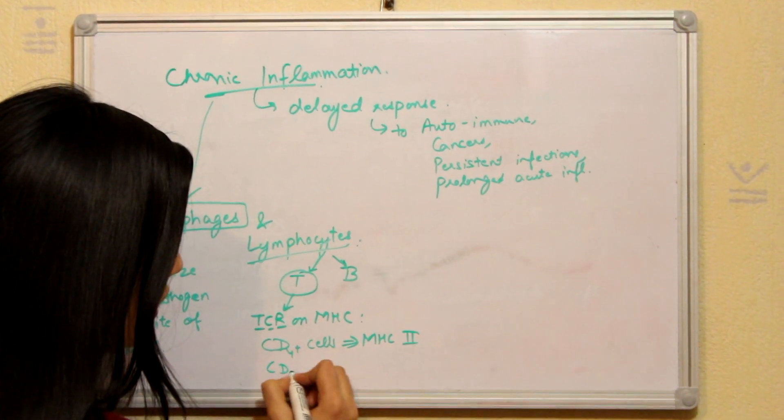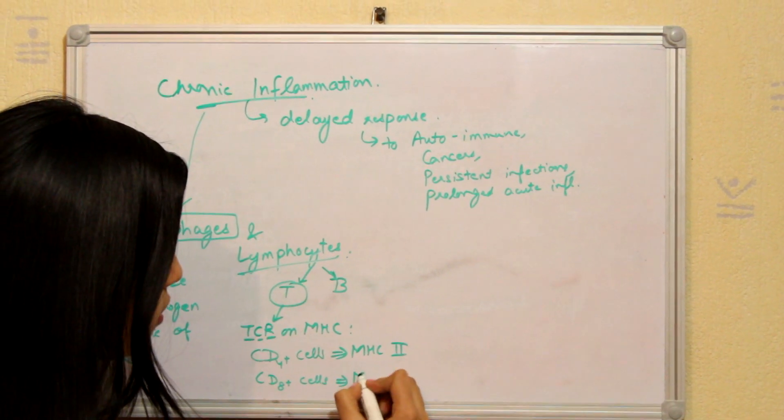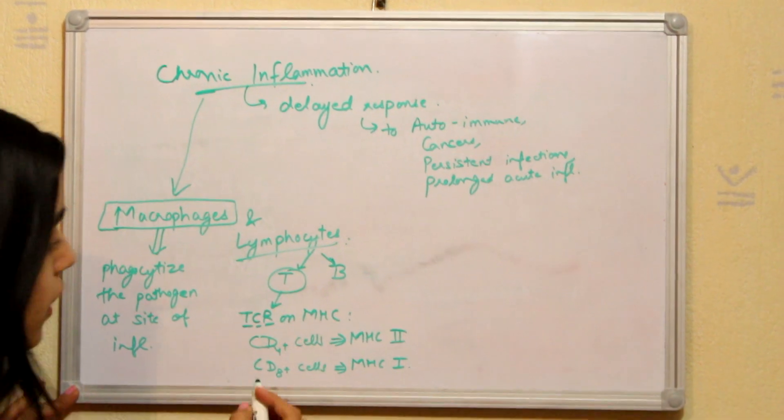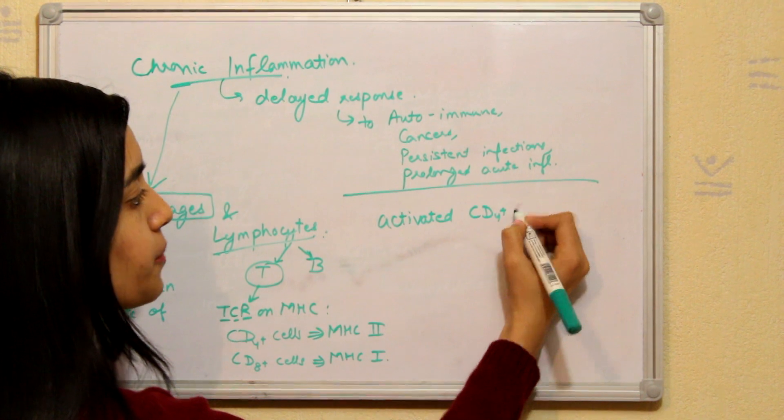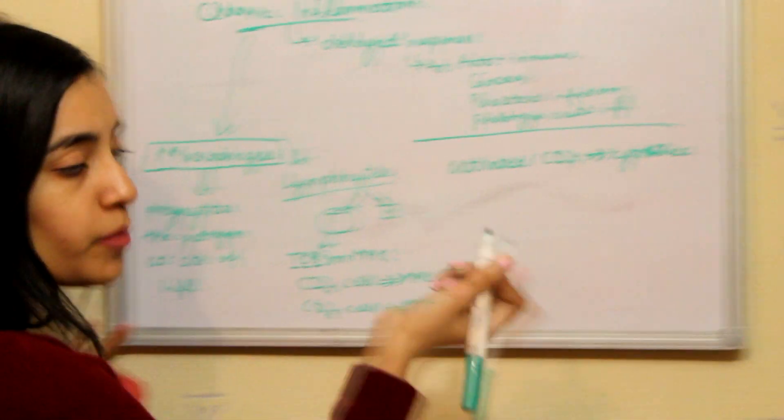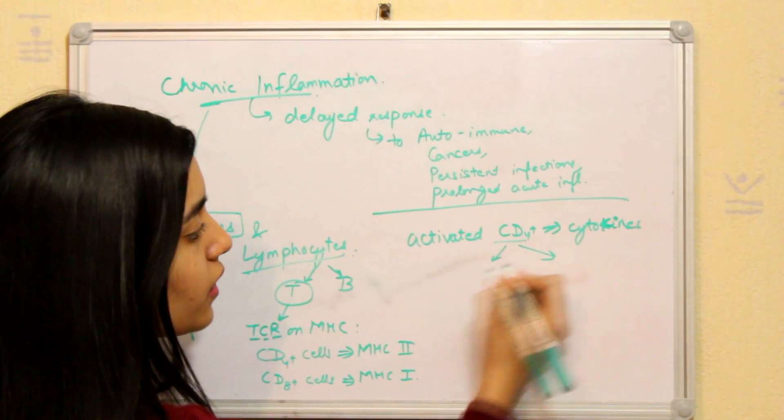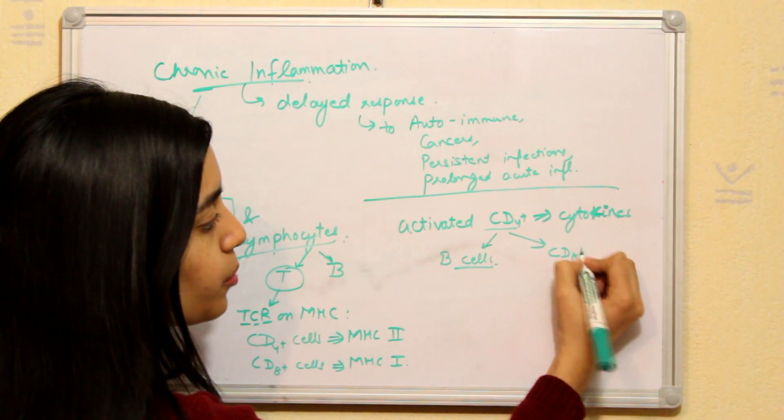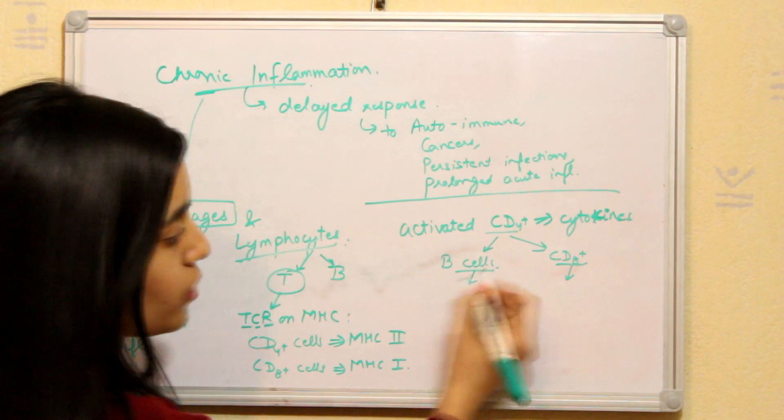And these activated CD4 plus cells, they release some cytokines. These are the chemicals which are released by CD4, and this then makes the B cells and CD8 plus cells to release some kinds of interleukins, which we'll discuss now.